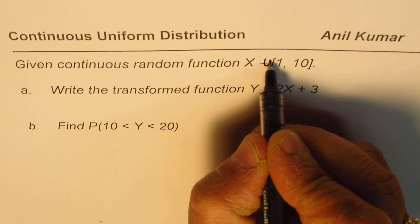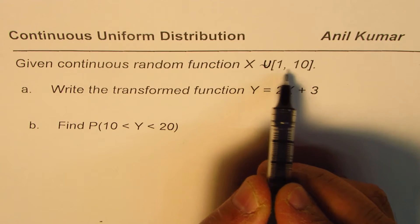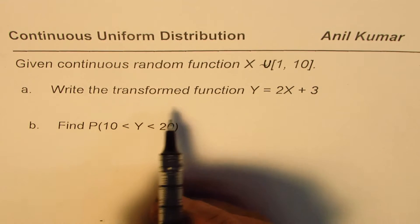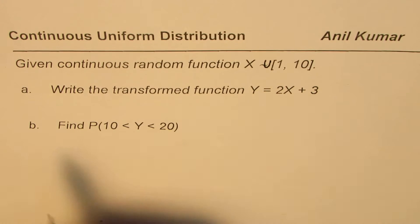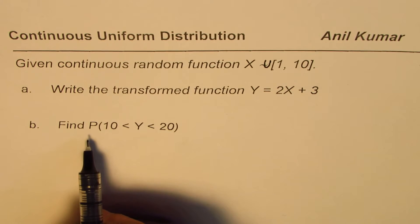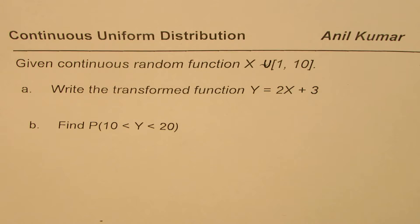Normally we write U for that, so let me write U, which is from 1 to 10. Write the transform function Y = 2X + 3, find probability for Y to be within 10 and 20.